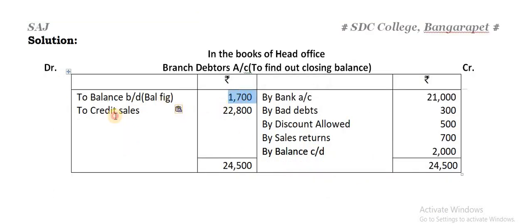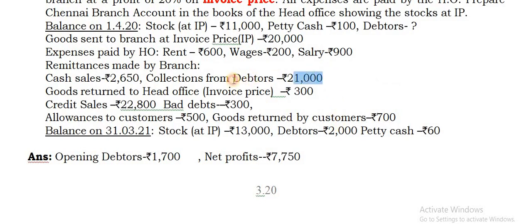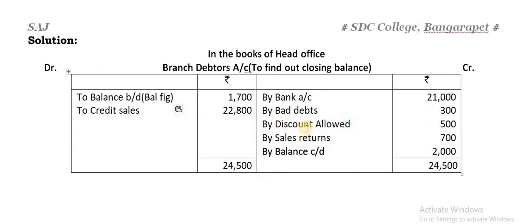This is the difference in the debtors account - the balancing figure. The cash payment and returns of 500 as well as 700, along with bad debts, discount, load, and sales returns, then balance carried on. The total you can take as 24,500 and the difference you are getting there is the opening debtors - that's the opening balance.